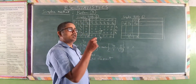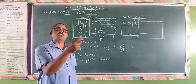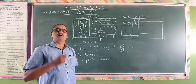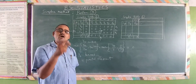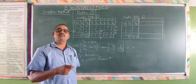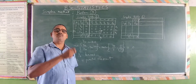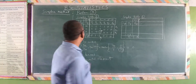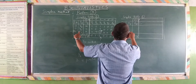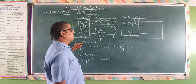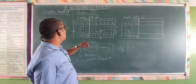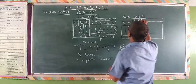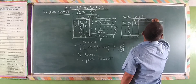Now entering simplex table 2. The first important thing is what changes are made in yb, the basis matrix. In yb, y3 enters and y6 leaves. So instead of y6, we replace it with y3. y4 and y5 remain as they are. The costs are written as: 1, minus 1, 3, 0, 0, 0, 0.